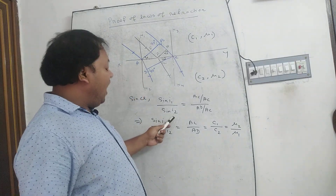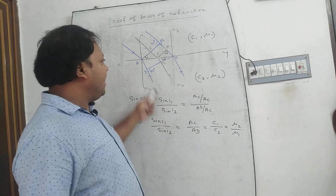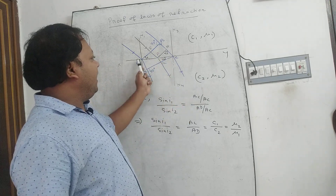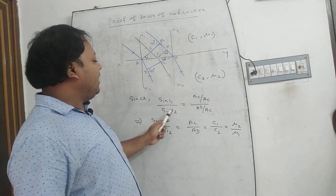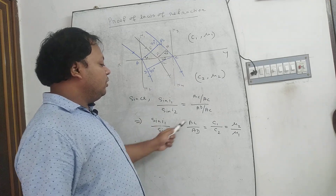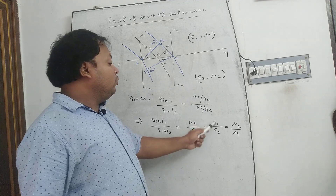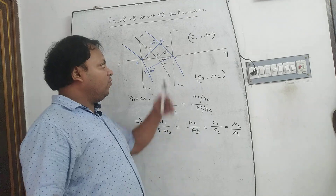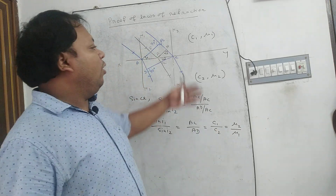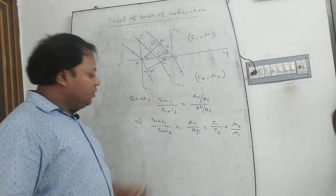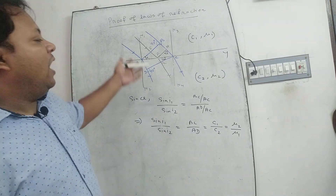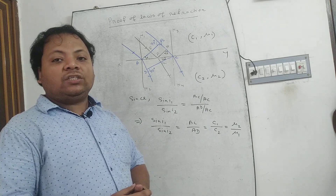Since sin I1/sin I2: from triangle ABC, sin I1 = BC/AC, where BC is the opposite side and AC is the hypotenuse. From triangle ADC, sin I2 = AD/AC. This gives sin I1/sin I2 = BC/AD. Since BC/AD = C1/C2 — that is, the speed of light in the first medium divided by the speed of light in the second medium — this equals μ2/μ1, the absolute refractive index of the second medium divided by the absolute refractive index of the first medium. This proves Snell's law, that is, the second law of refraction. From Huygens' principle, we can prove the laws of reflection and laws of refraction.